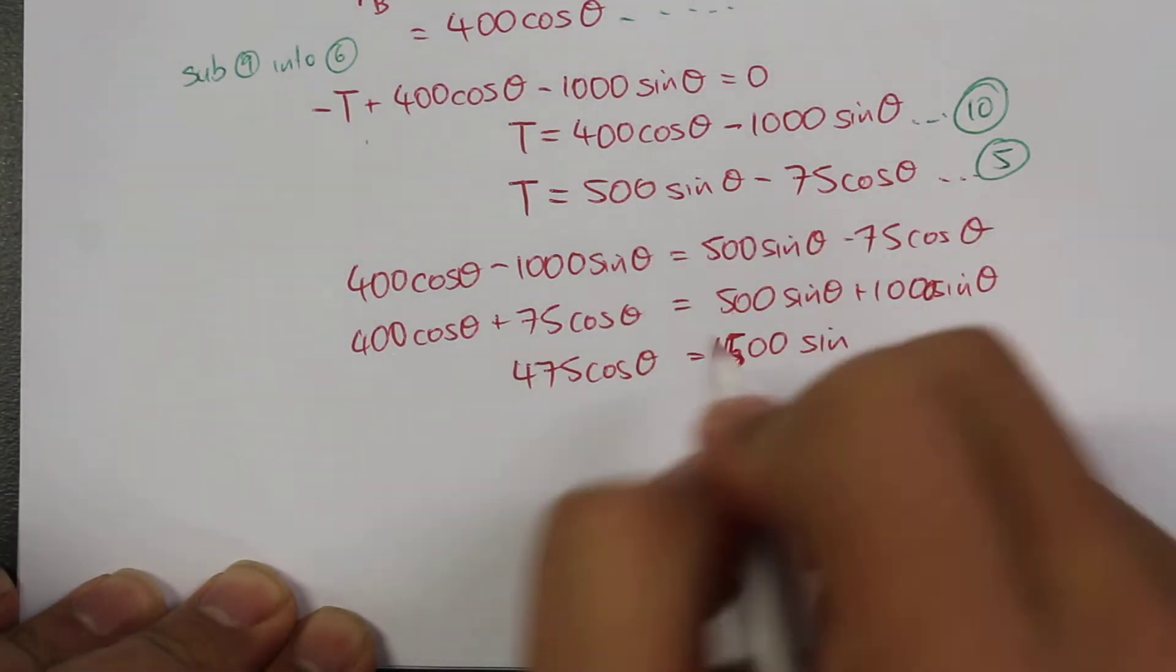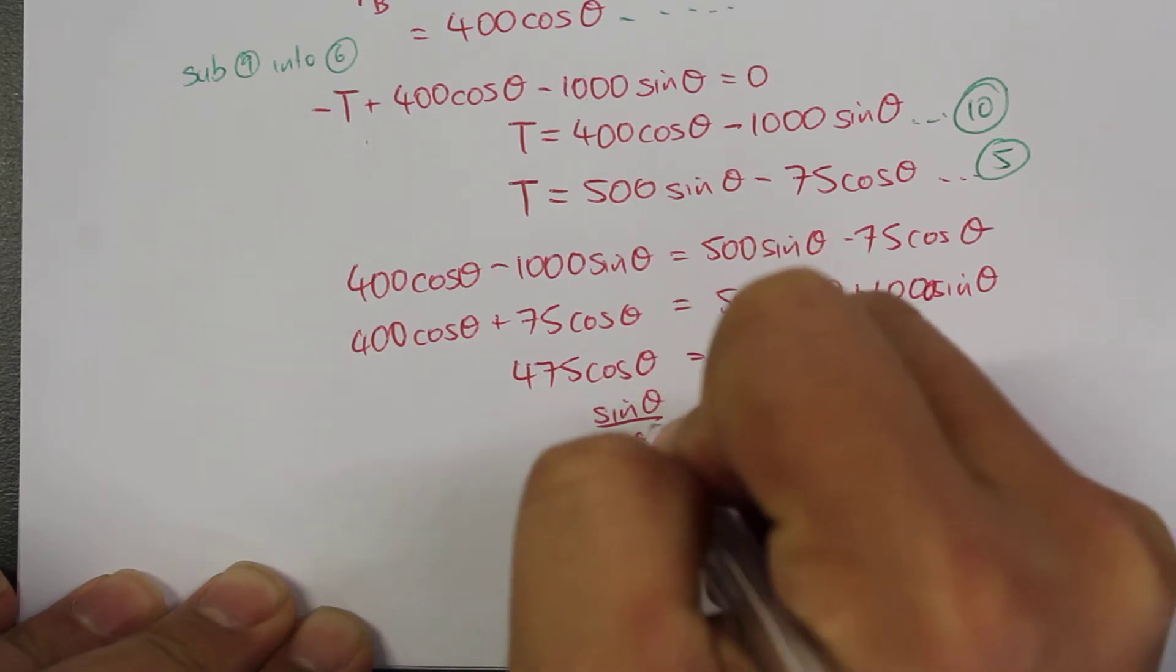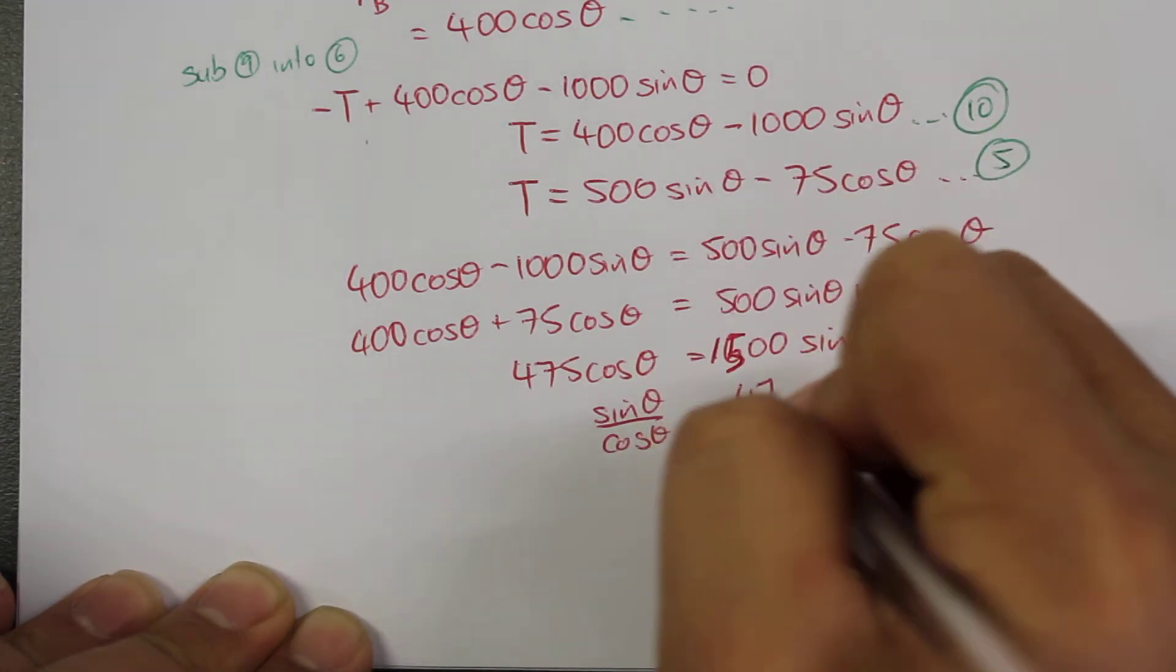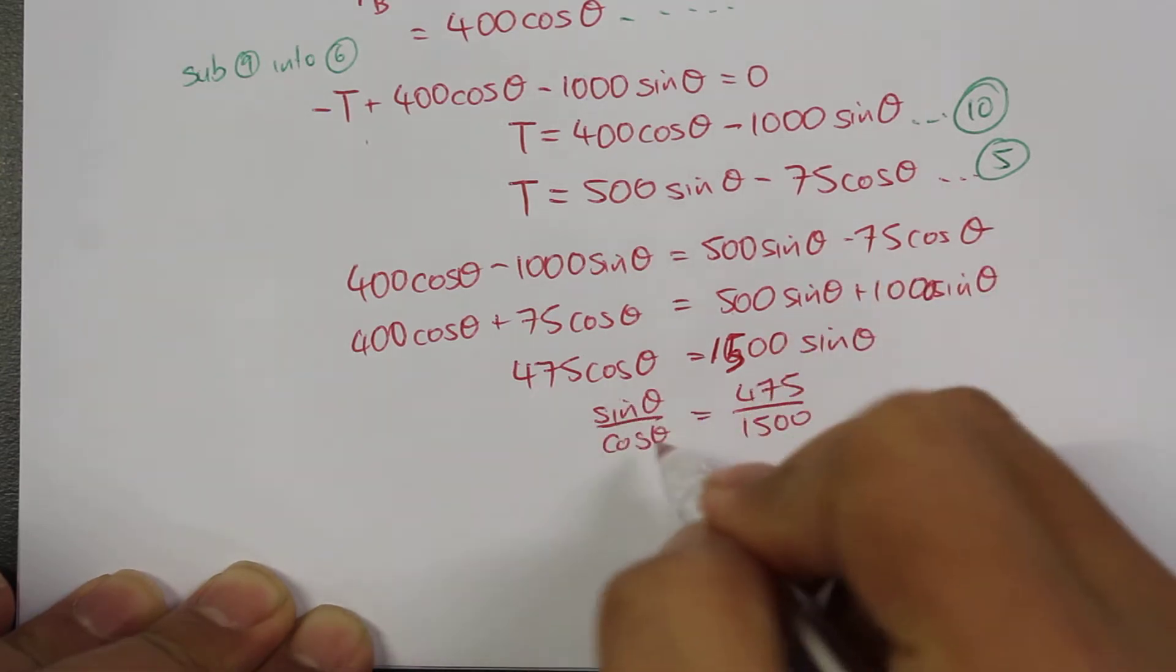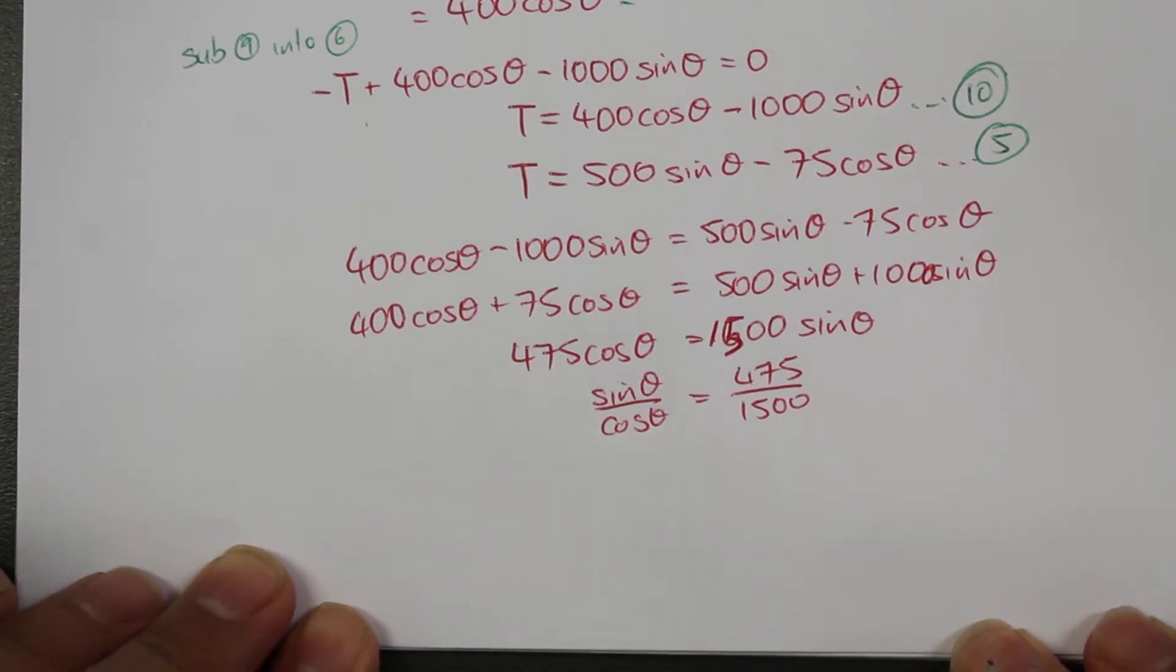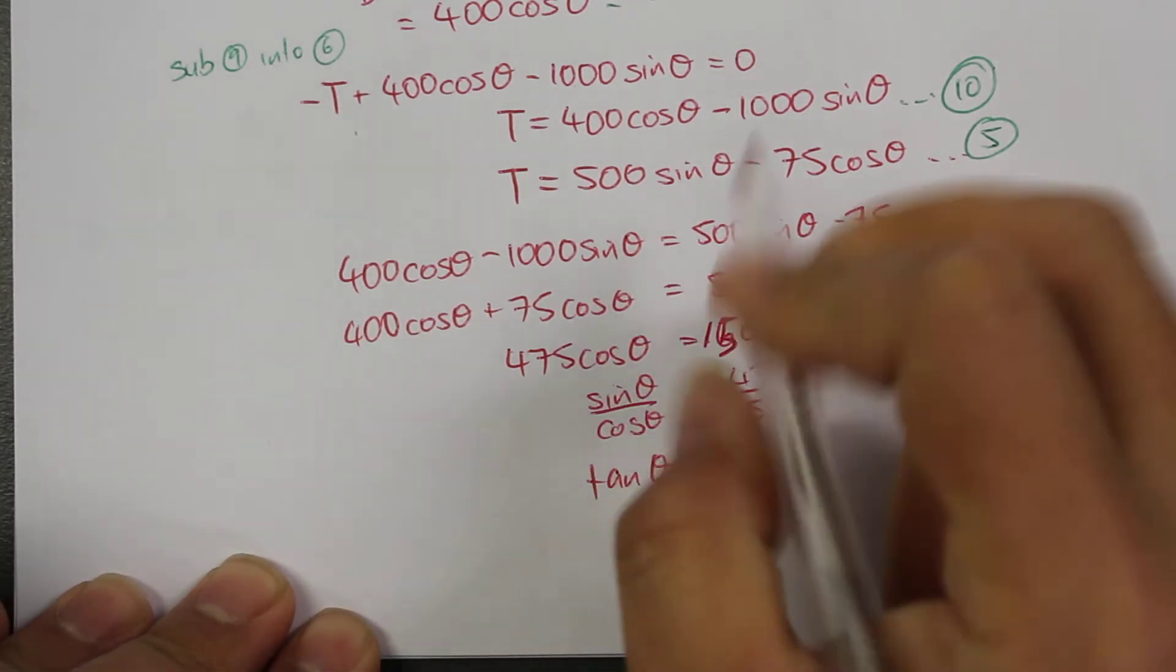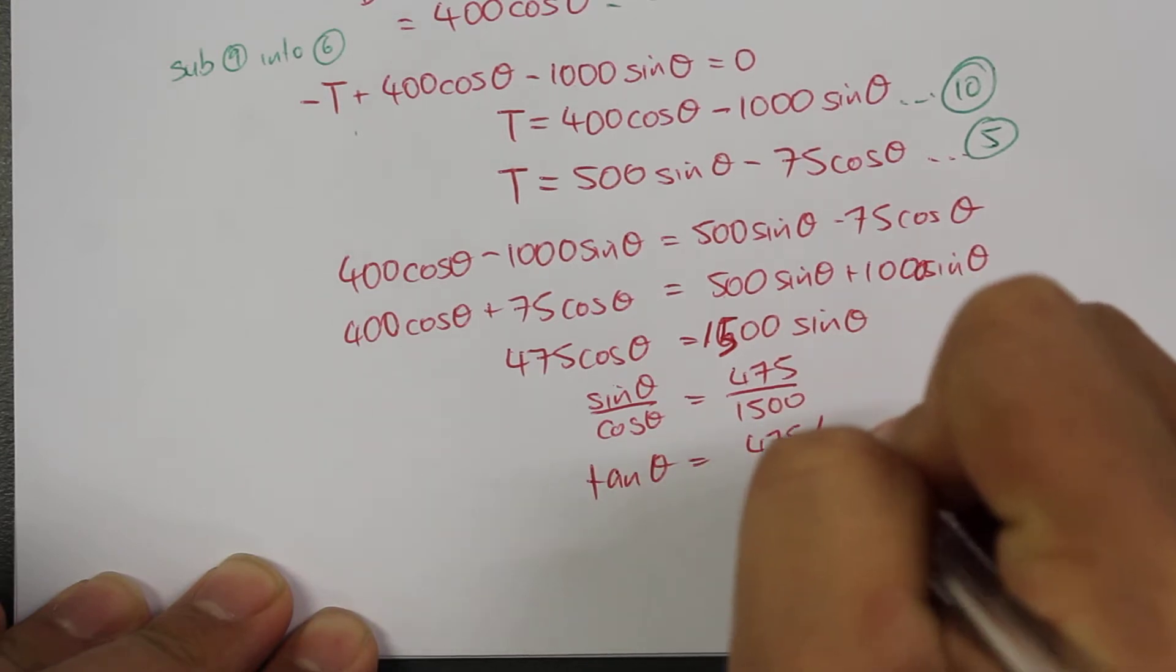We can rewrite this as sine theta divided by cosine theta equals 475 divided by 1500. Sine theta over cosine theta is the same as writing tan theta. So tan theta equals 475 divided by 1500.